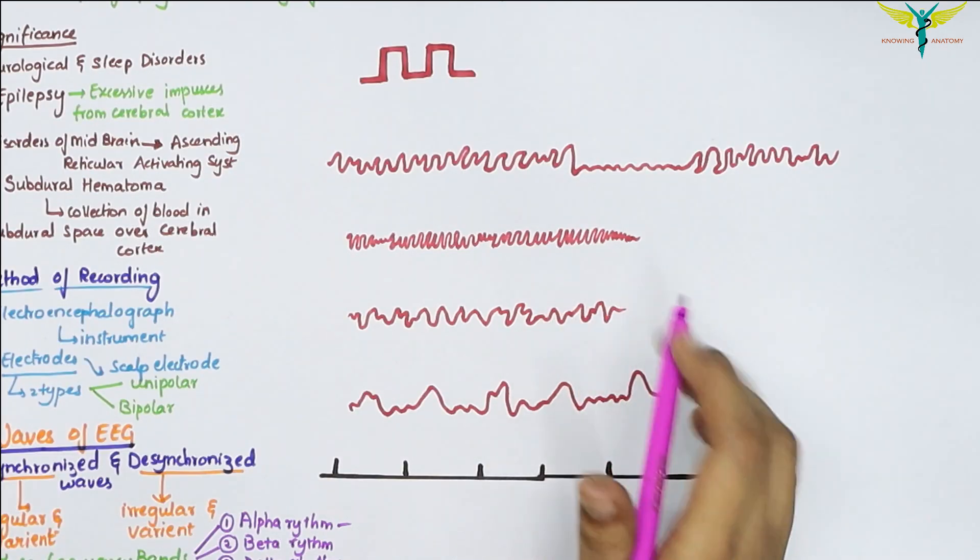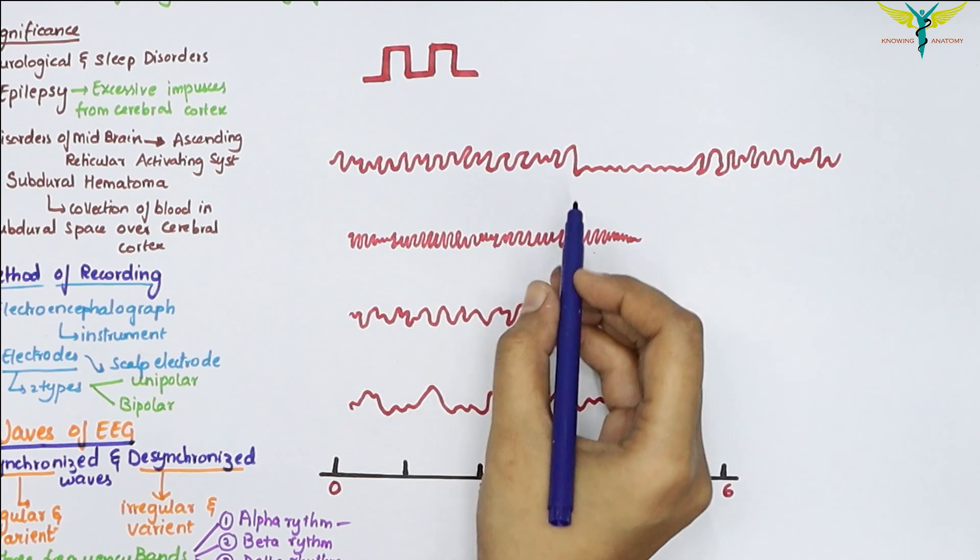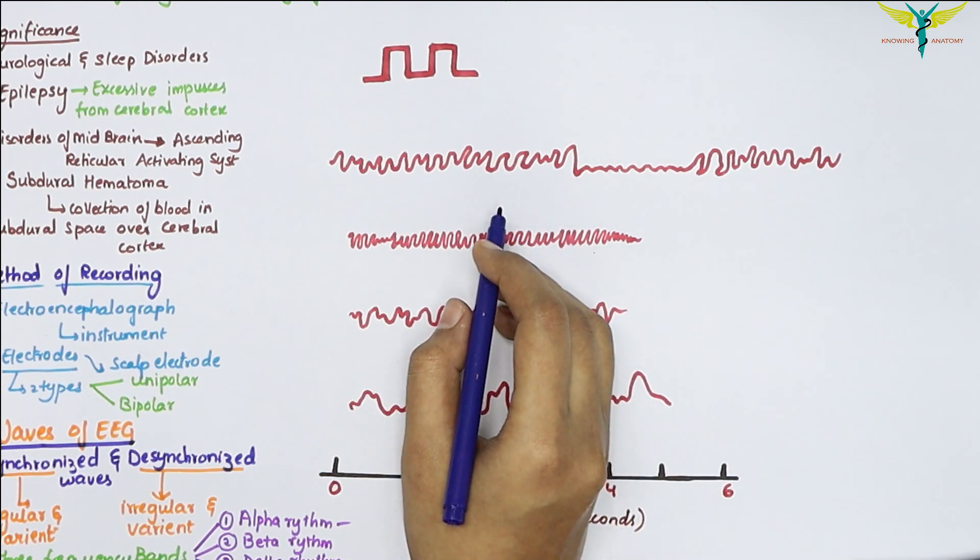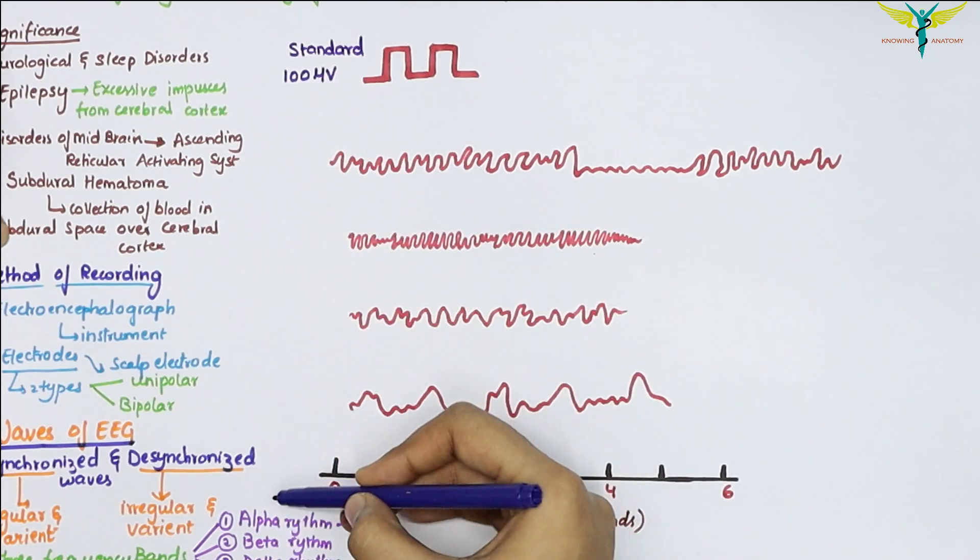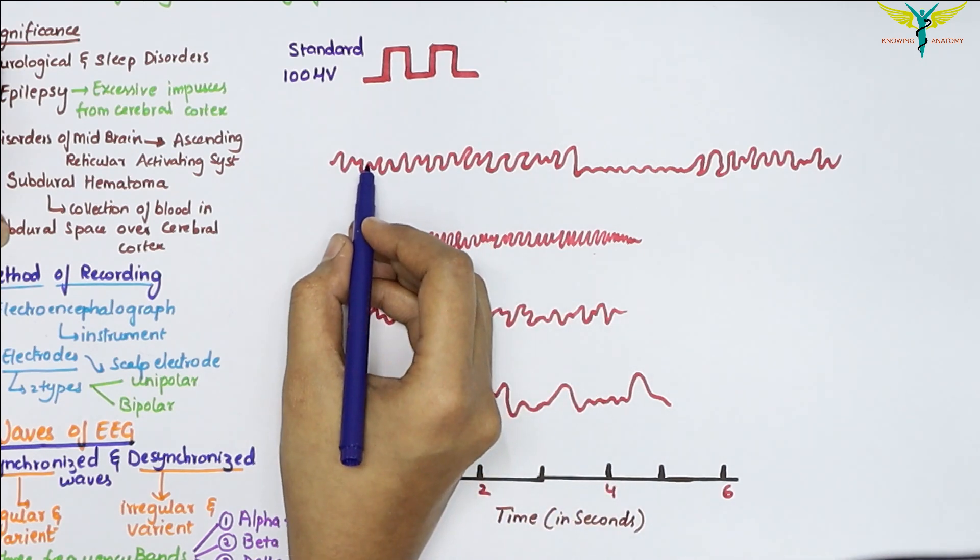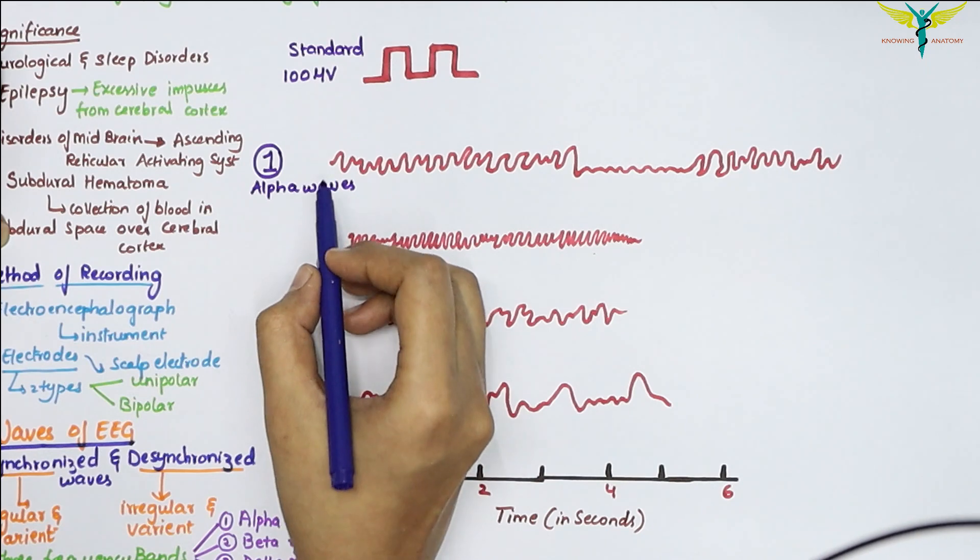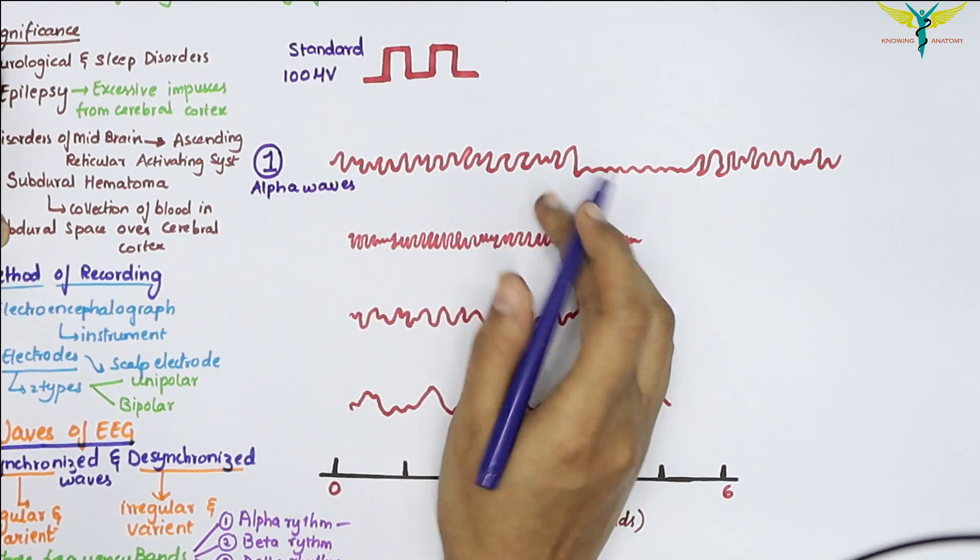Now coming to the first rhythm, that is the alpha rhythm. This picture indicates the waves of the electroencephalogram, and this line indicates the time in seconds. The alpha rhythm consists of rhythmical waves which appear at a frequency of 8 to 12 waves per second.